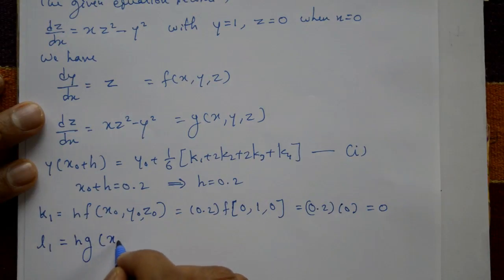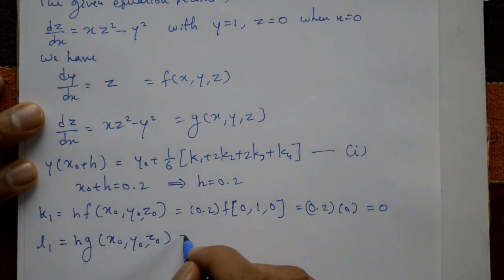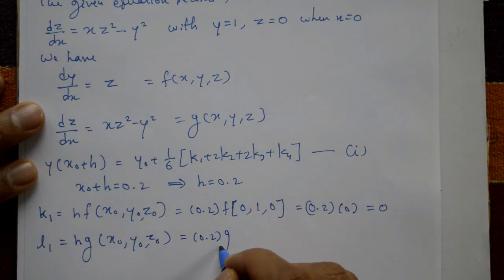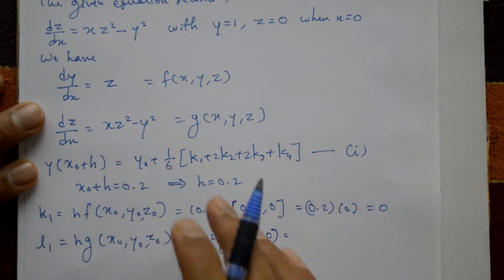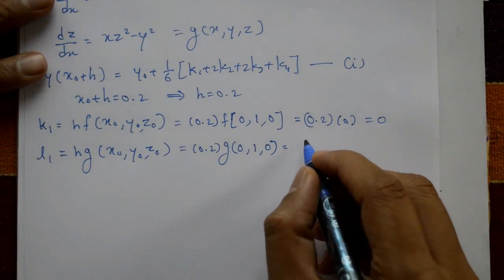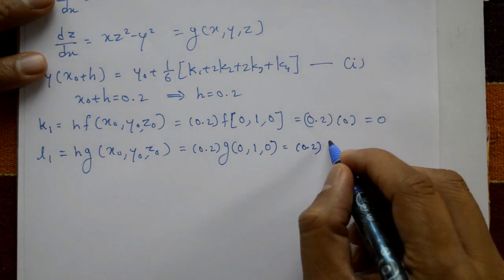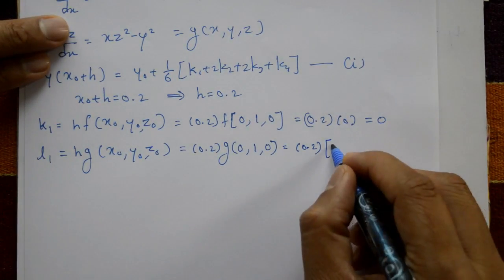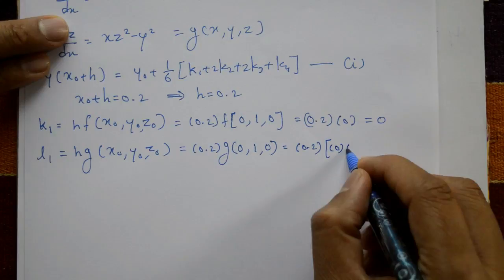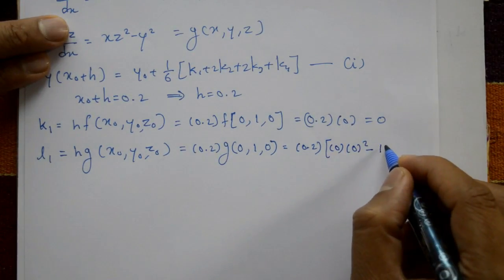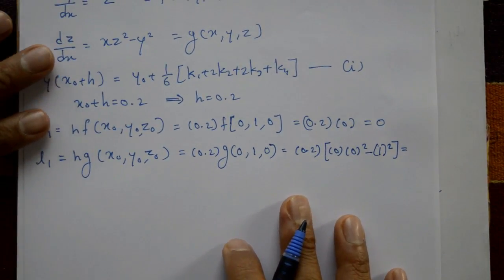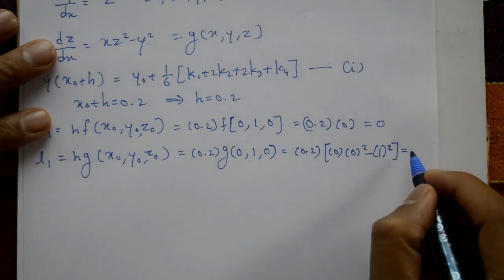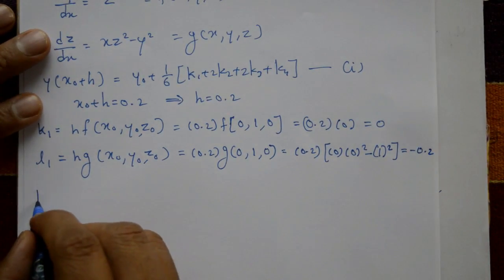l1 = h·g(x₀, y₀, z₀) = 0.2·g(0, 1, 0). Since g(x, y, z) = xz² - y², we get 0.2 × (0×0² - 1²) = 0.2 × (-1) = -0.2. So l1 = -0.2.